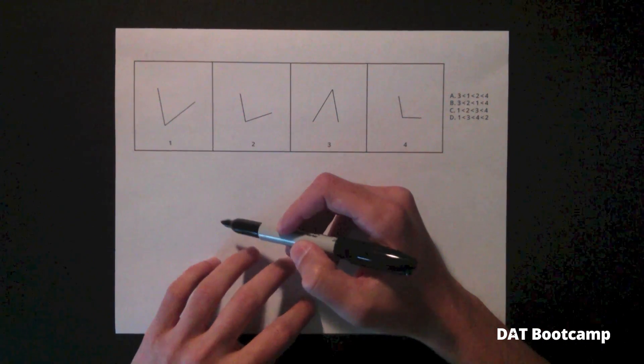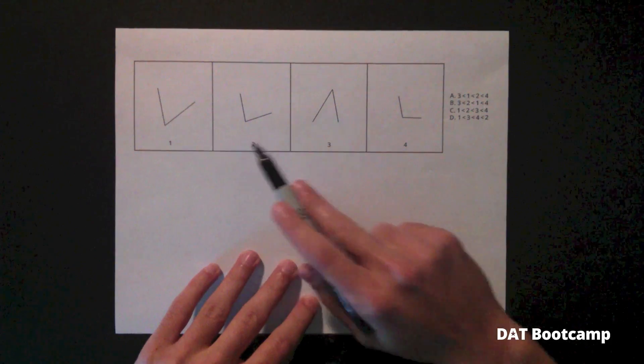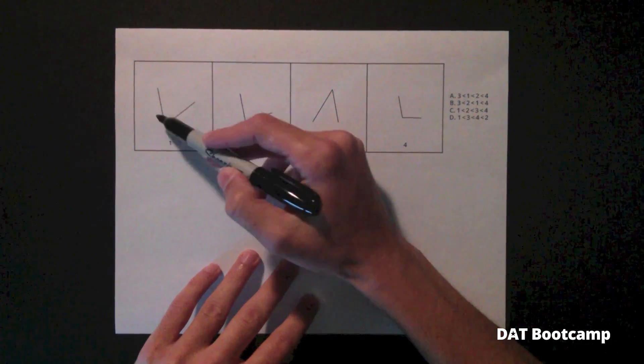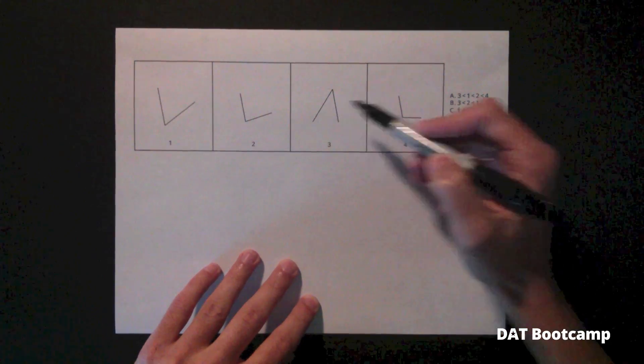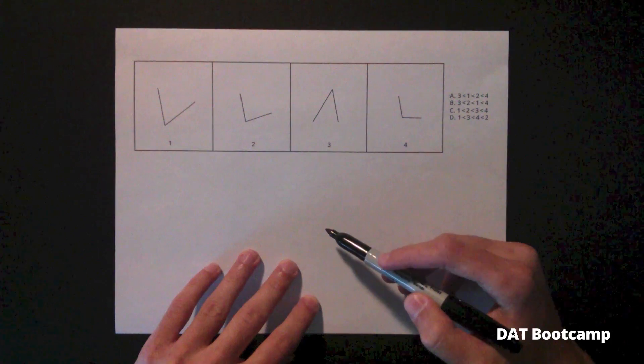To start, we're going to go over some of the rules. You have to rank all four of these angles, the interior angles, from smallest to largest.